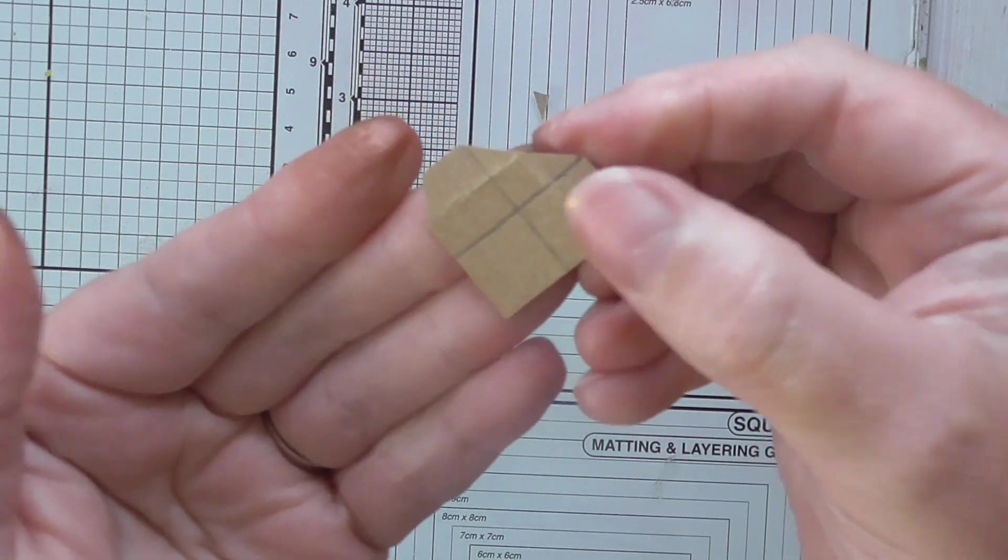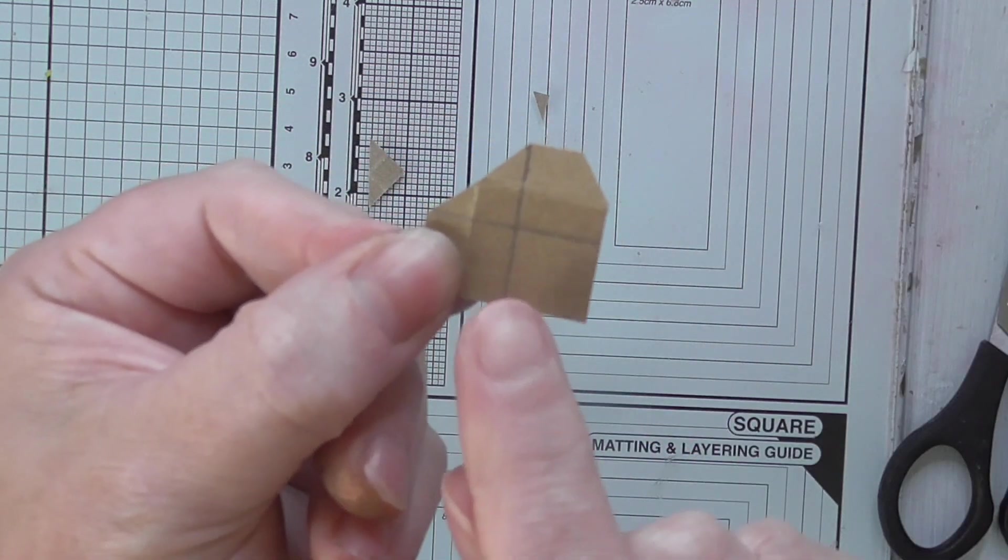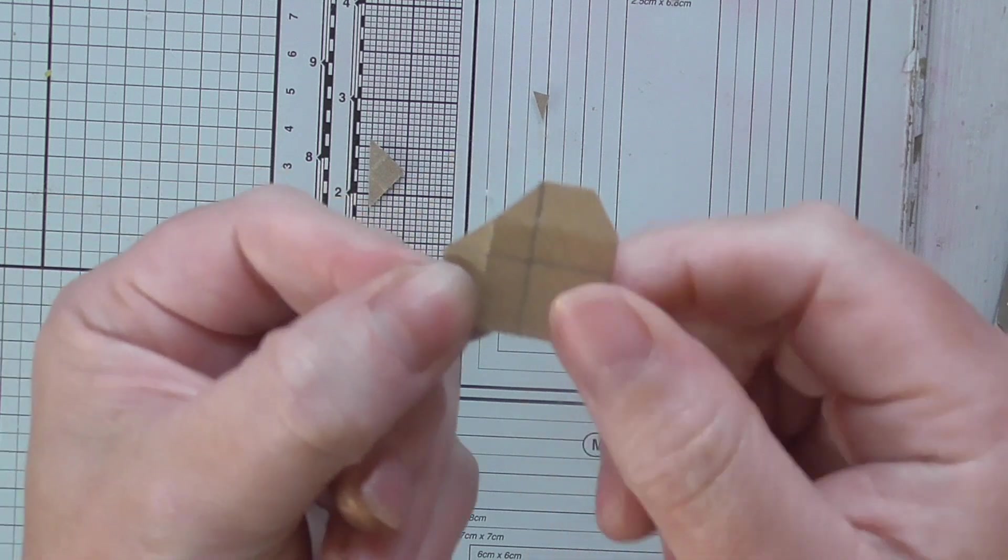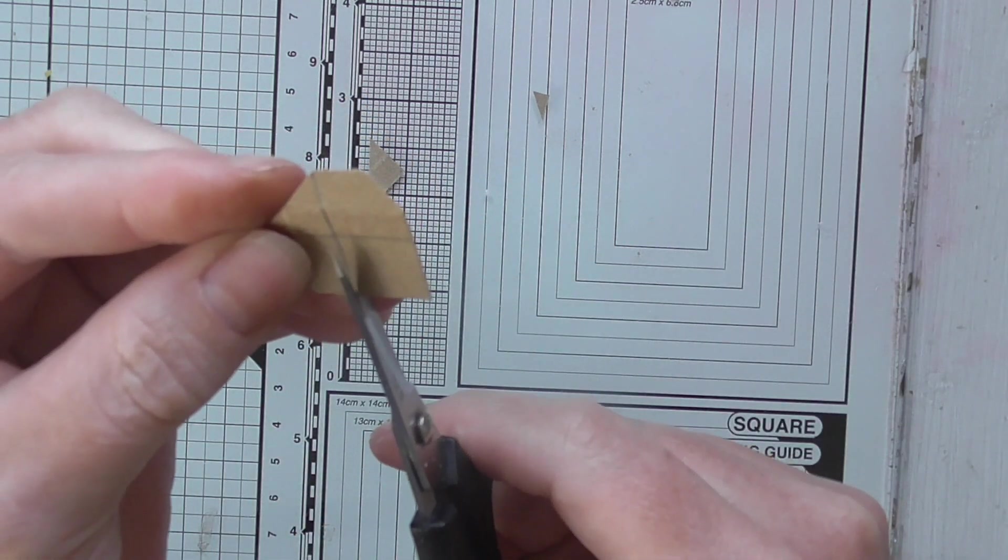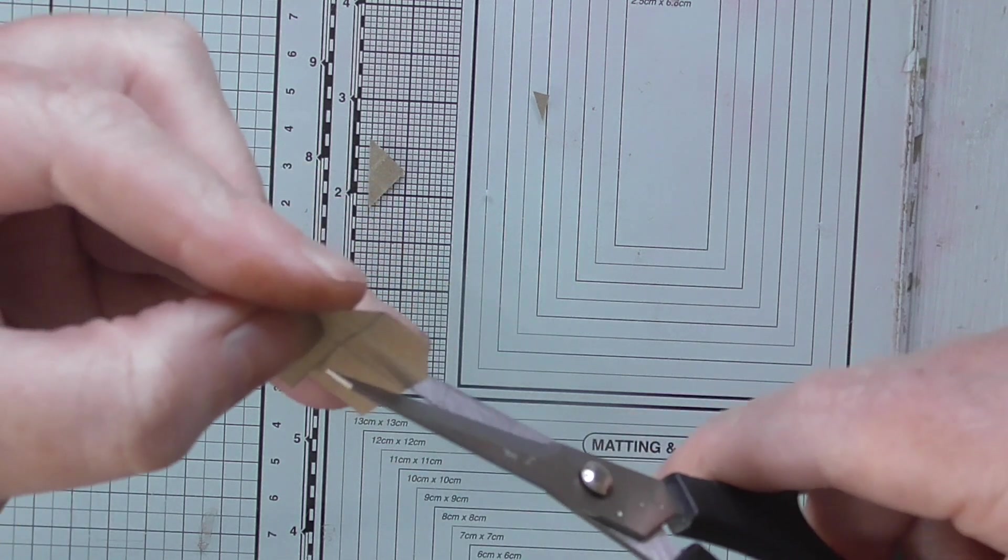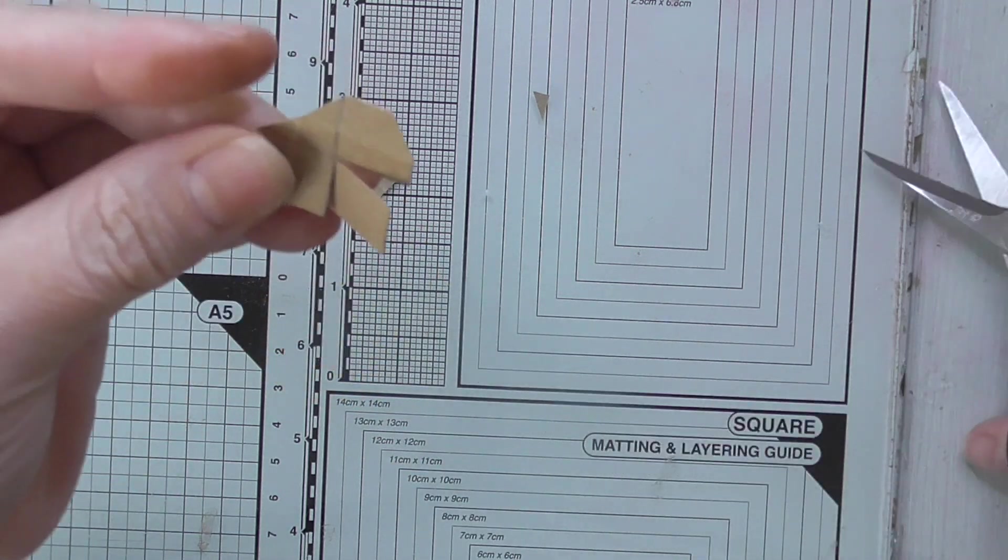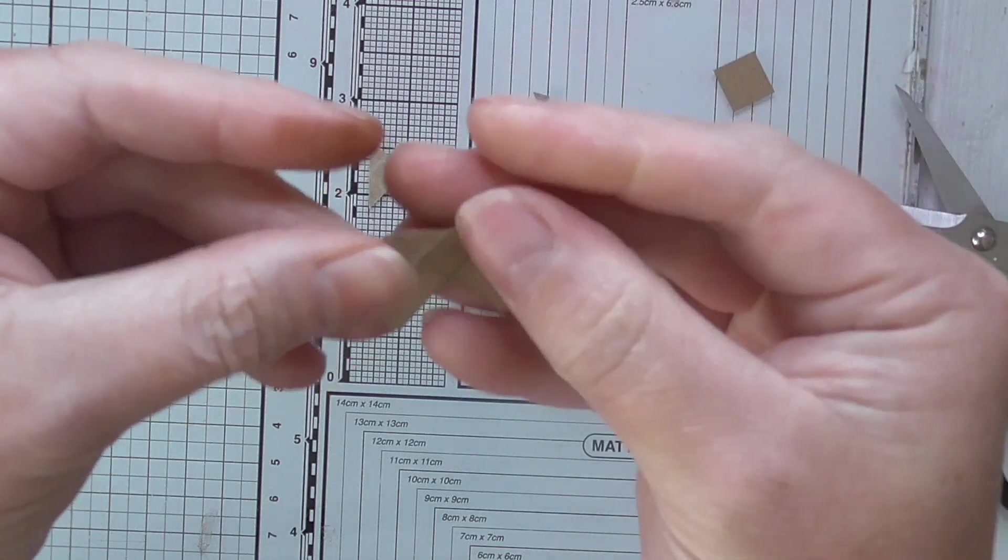So when you've done that, we now want to cut away this larger square here. Cut that away.